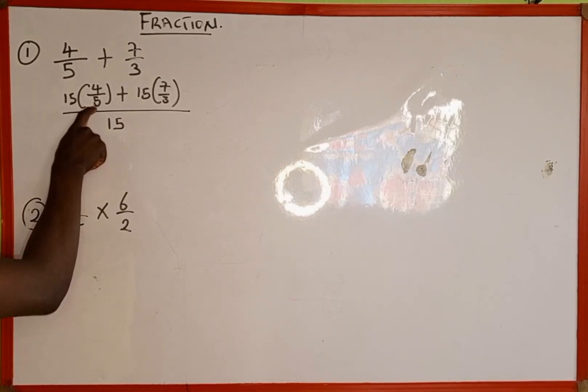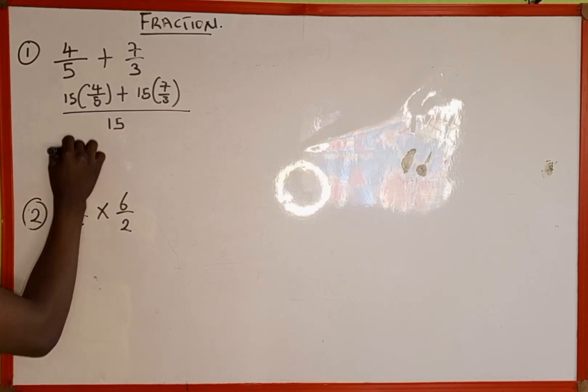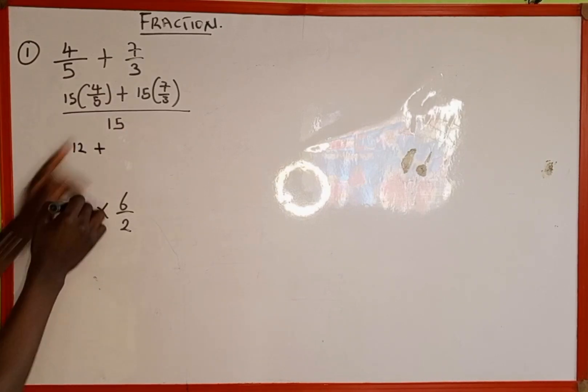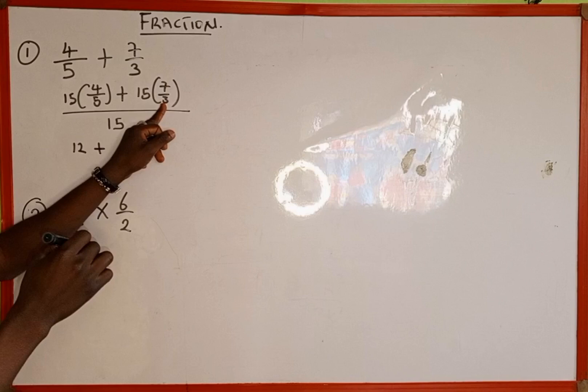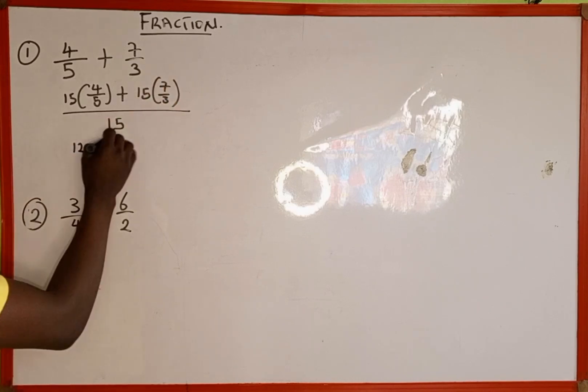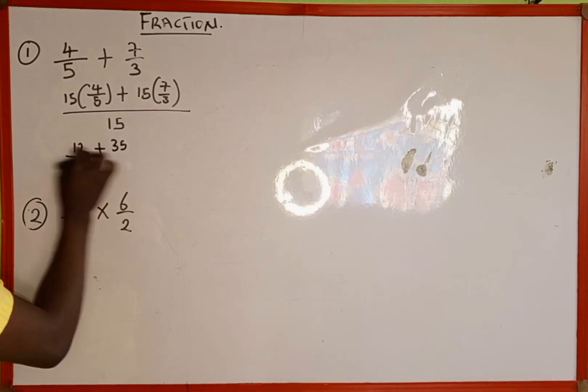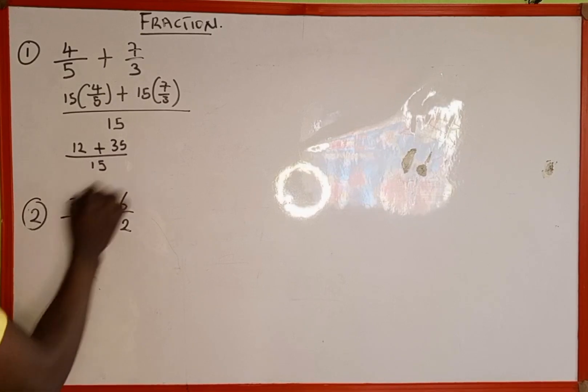So now we're going to simplify. 15 divided by 5 is 3, then 3 multiplied by 4 is going to give us 12. Then plus, 15 divided by 3 is 5, then 5 multiplied by 7 is going to give us 35.